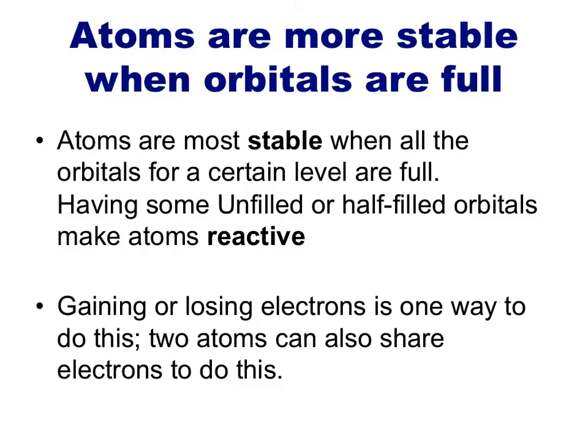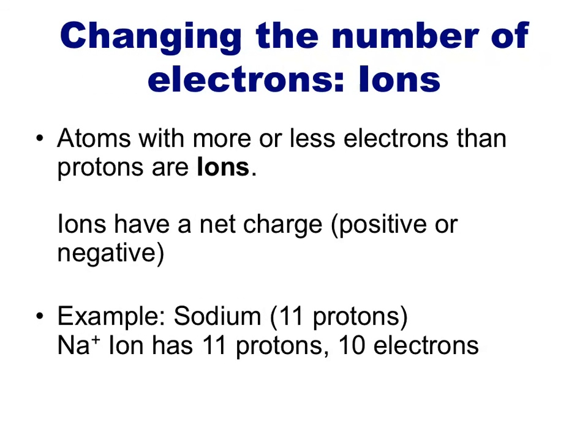Atoms are the most stable when their outermost energy level is filled. Unfilled or half-filled orbitals in the outermost energy level makes an atom reactive. Atoms can share electrons to satisfy this demand, or they can either gain or lose electrons completely.